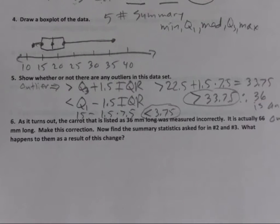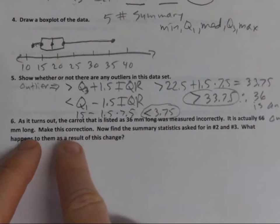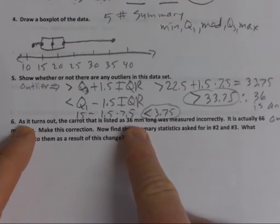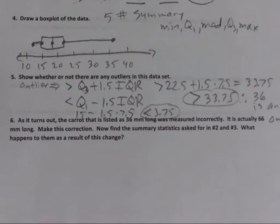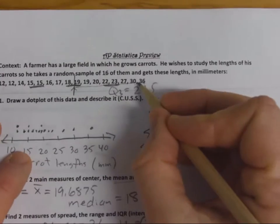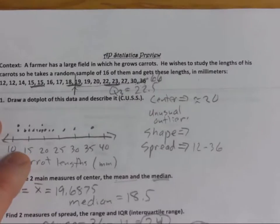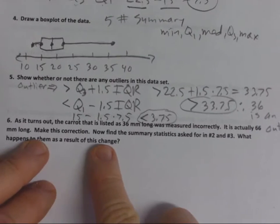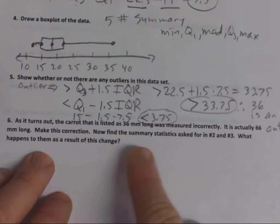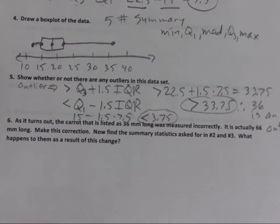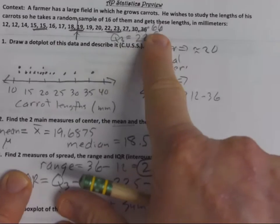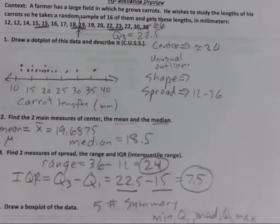The last thing about this data set: the carrot listed as 36 millimeters was measured incorrectly — it is actually 66 millimeters long. Now it's definitely an outlier. What happens to the summary stats — mean, median, IQR, standard deviation, range — when you have a really unusual value like this?